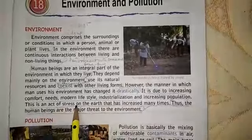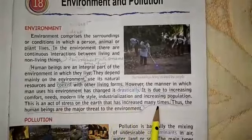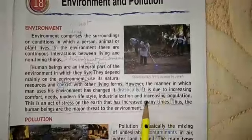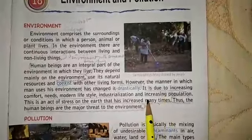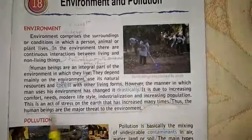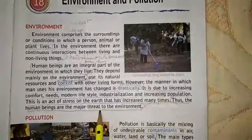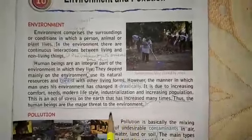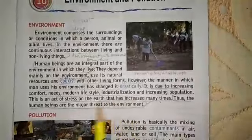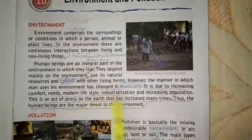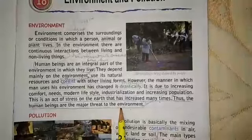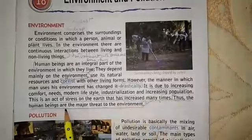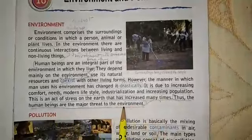This is a stress on the earth — like a pressure on the earth — that has increased many times. Human beings are the major threat to the environment because they pollute the air and atmosphere, they cut forests and trees, and cause a lot of destruction.